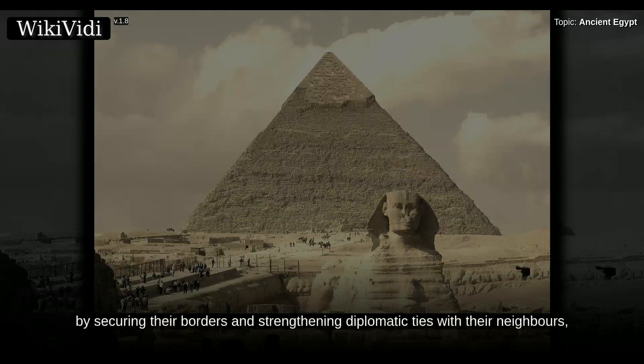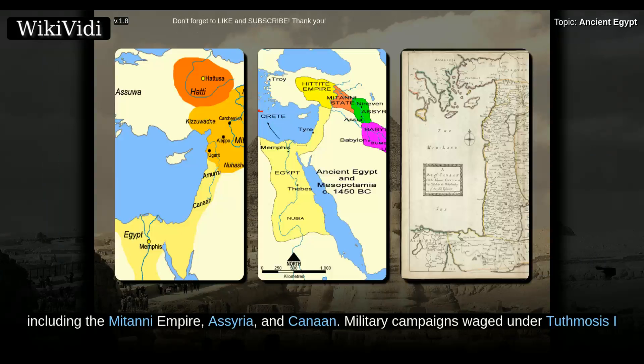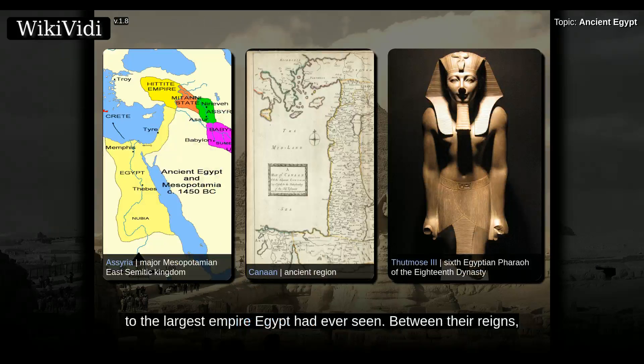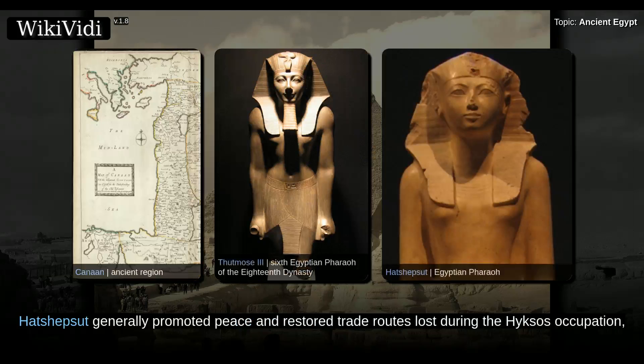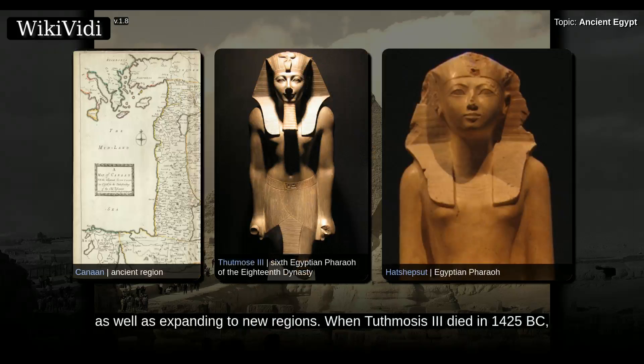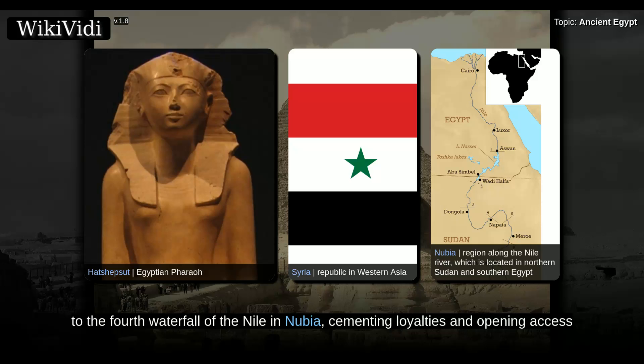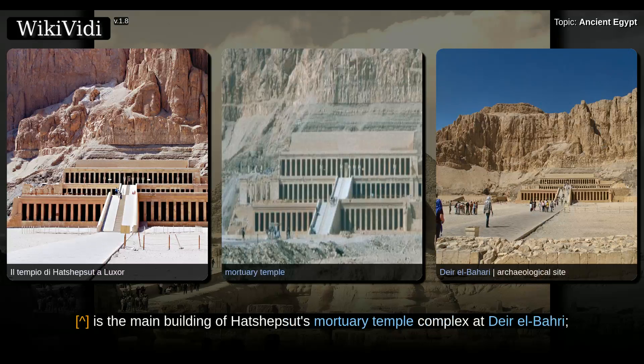The New Kingdom pharaohs established a period of unprecedented prosperity by securing their borders and strengthening diplomatic ties with their neighbors, including the Mitanni Empire, Assyria, and Canaan. Military campaigns waged under Thutmose I and his grandson Thutmose III extended the influence of the pharaohs to the largest empire Egypt had ever seen. Between the reigns, Hatshepsut generally promoted peace and restored trade routes lost during the Hyksos occupation, as well as expanding to new regions. When Thutmose III died in 1425 BC, Egypt had an empire extending from near northwestern Syria to the fourth waterfall of the Nile in Nubia, cementing loyalties and opening access to critical imports such as bronze and wood.